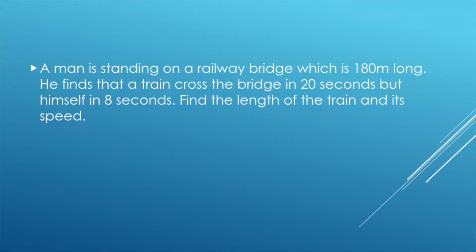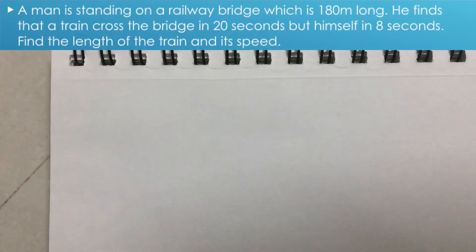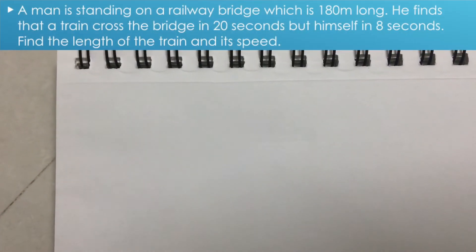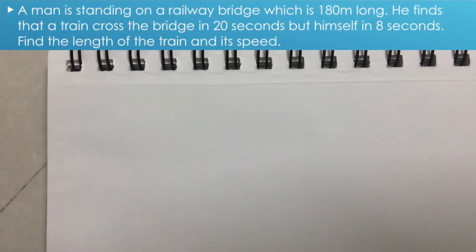Next question: a man is standing on a railway bridge which is 180 meters long. He finds that a train crosses the bridge in 20 seconds but crosses himself in 8 seconds. Find the length of the train and its speed. This is a tricky problem.